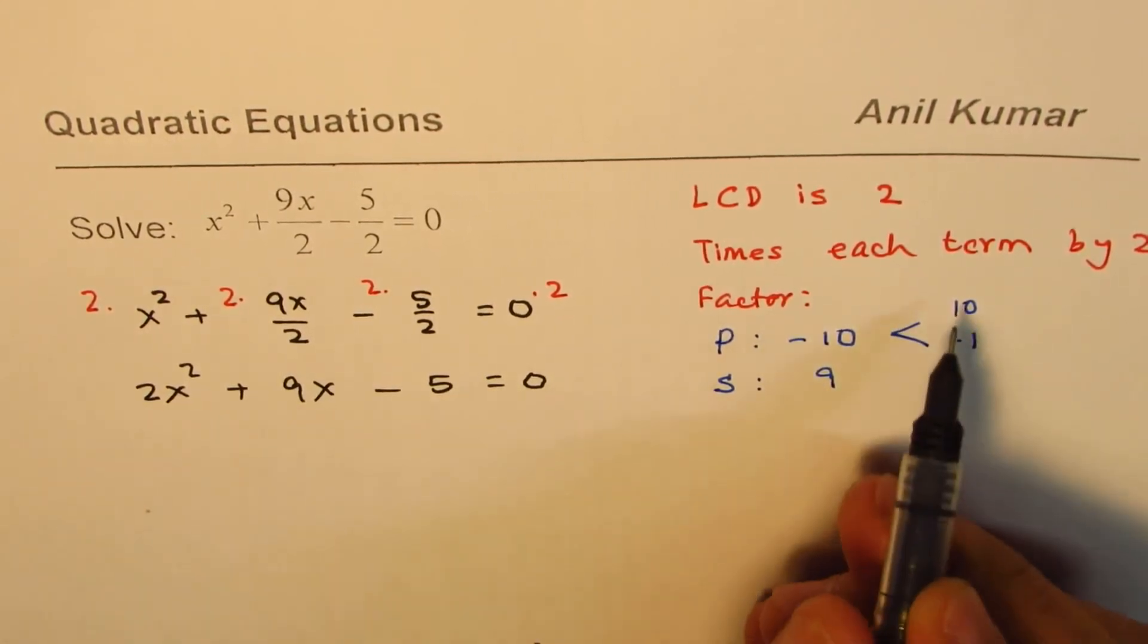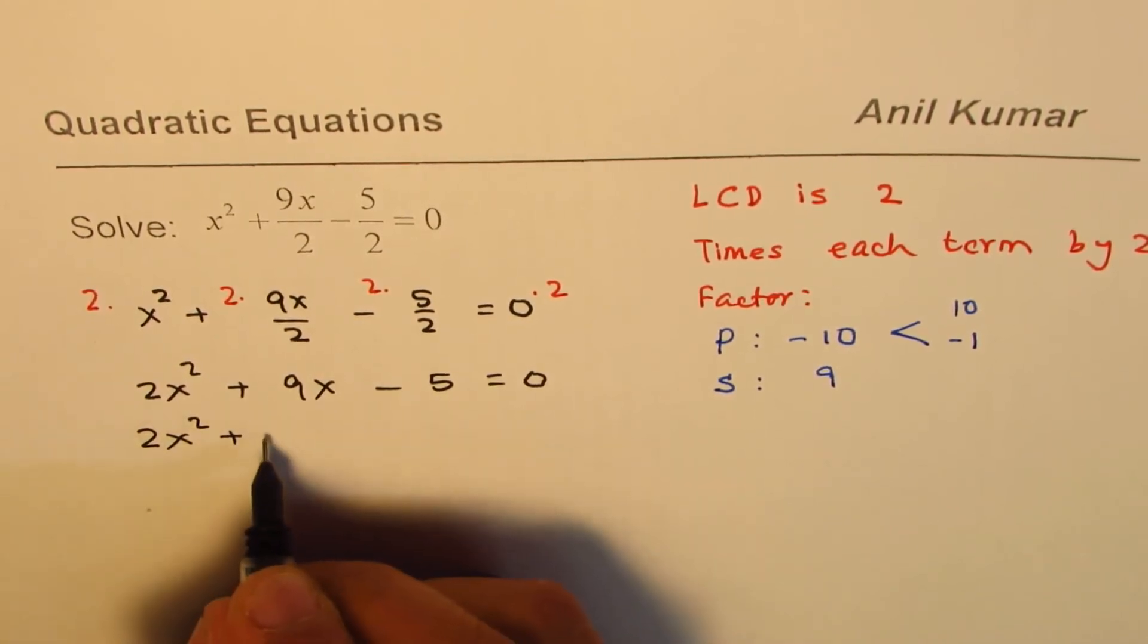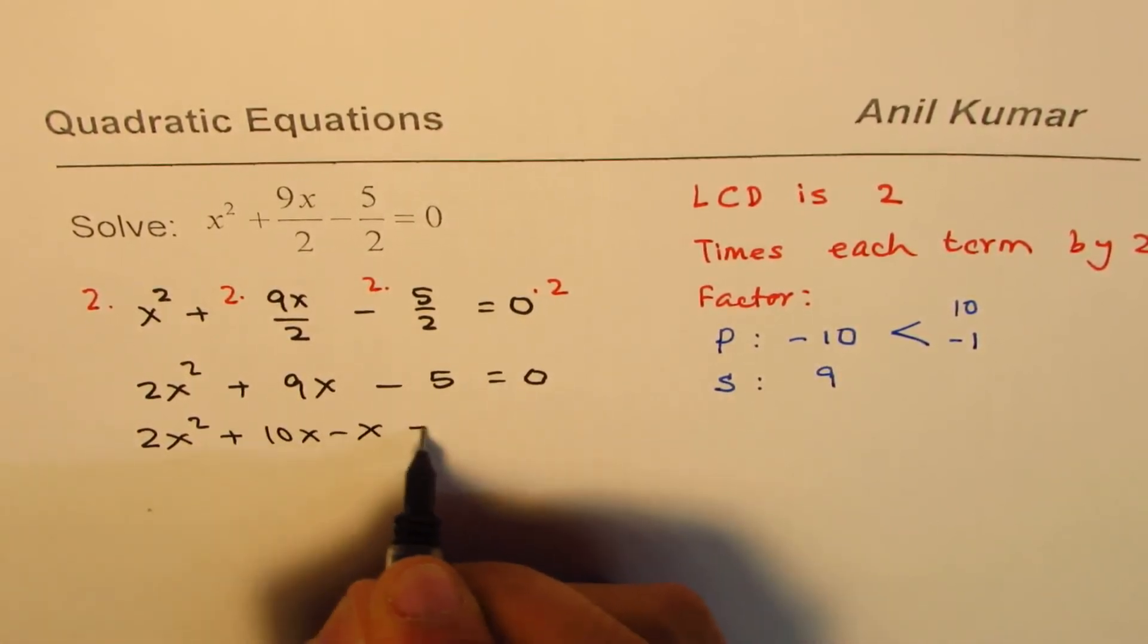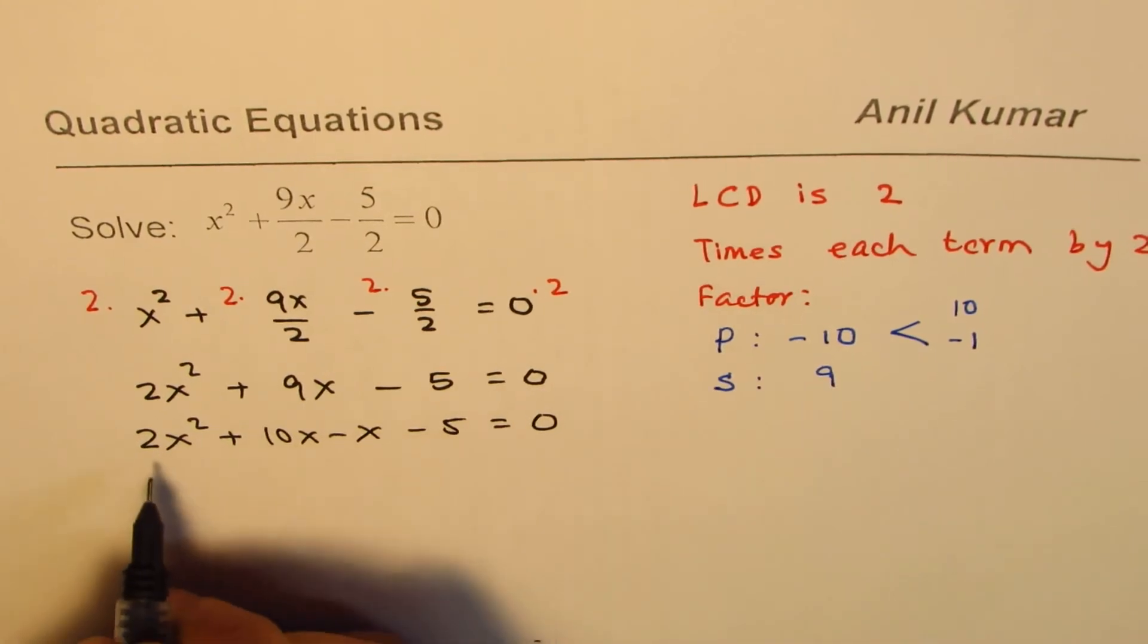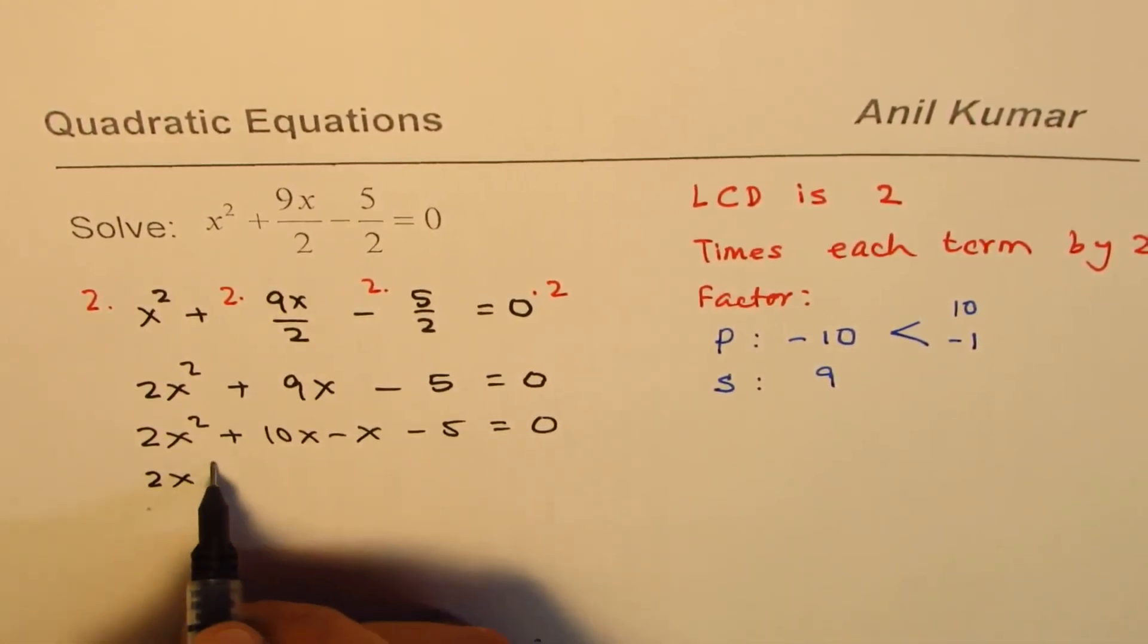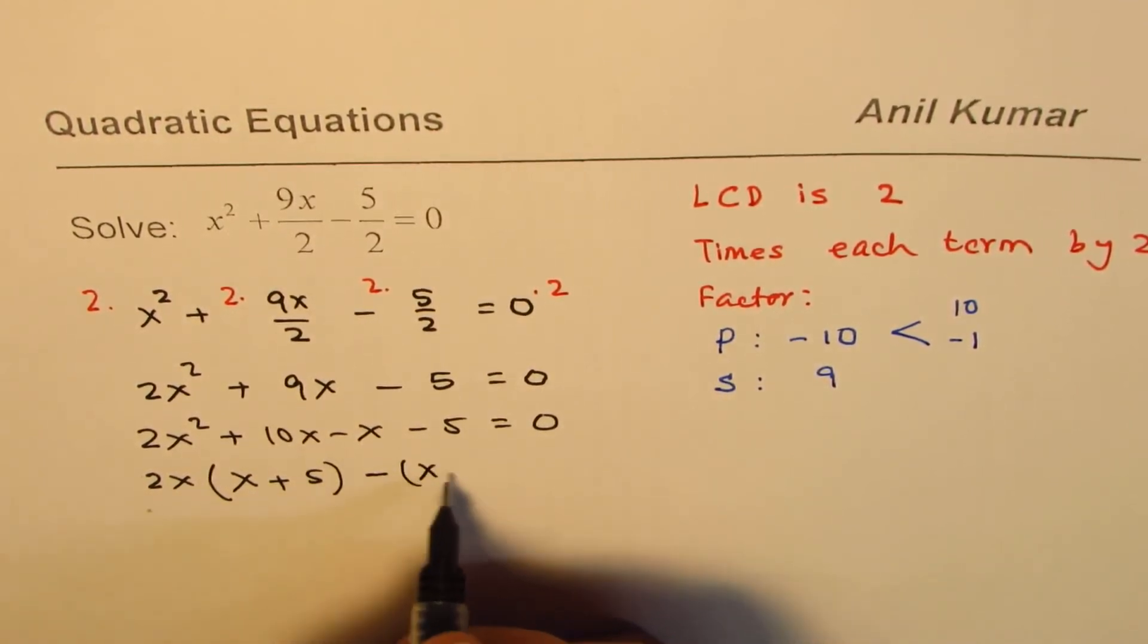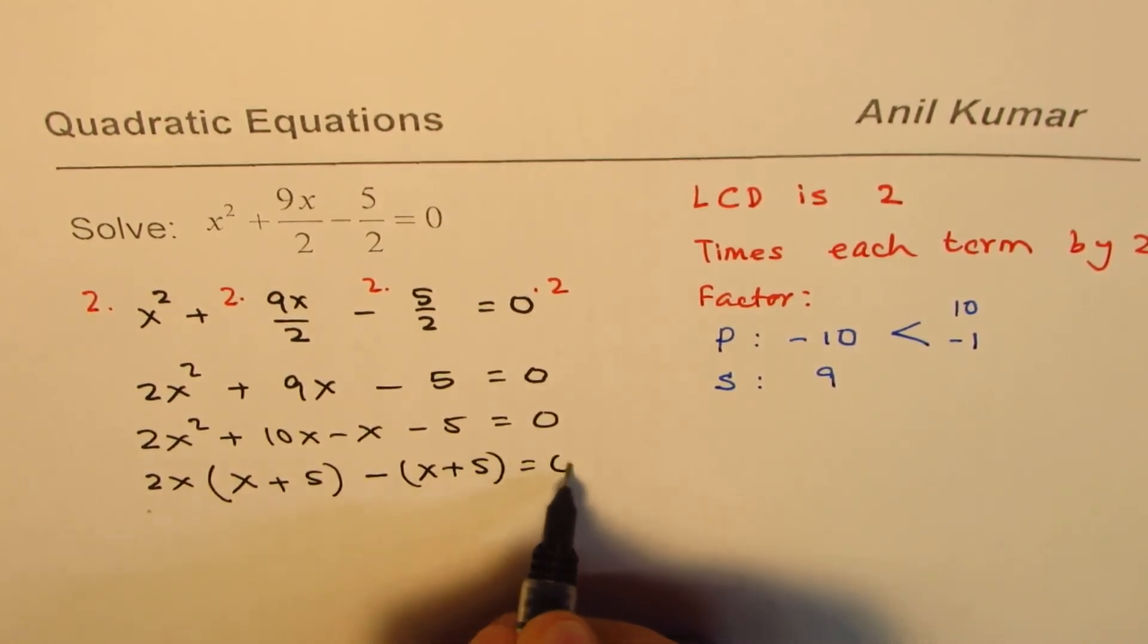So we'll split 9x into this combination: 2x² + 10x - x - 5 = 0. Now combining the first two terms and taking the common factor 2x, we get x + 5. From the last two terms, we can factor out -(x + 5).